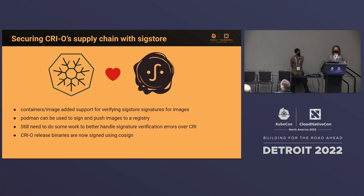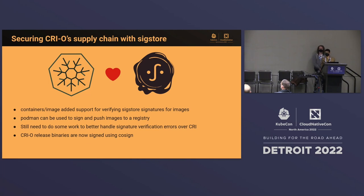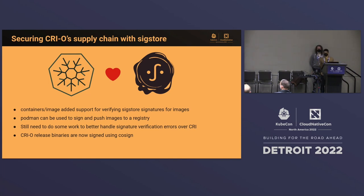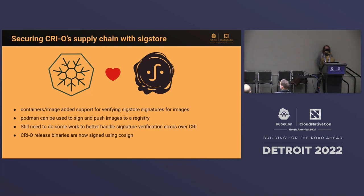Next, Rinal will talk about some sigstore stuff. CRI-O has support for sigstore-style signatures. The containers/image library CRI-O uses for pulling images has support for verifying those signatures. Podman fully supports signing and pushing images and signatures to a registry, and you can use CRI-O to verify those signatures on pull. We need to improve the UI when signature verification fails — today the CRI doesn't distinguish image pull error types, so we'll do upstream work so the kubelet can give the right message. Also, CRI-O release binaries are now signed using Cosign so you can verify them as well.